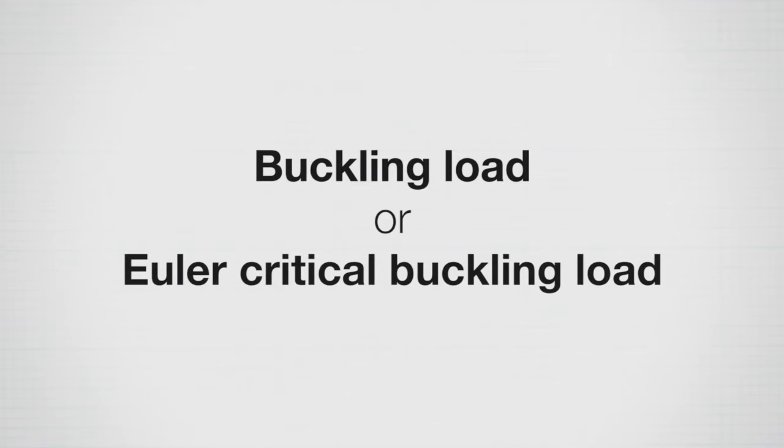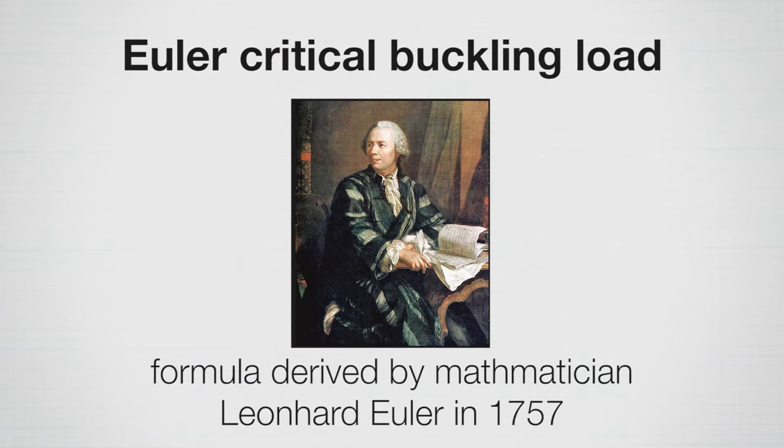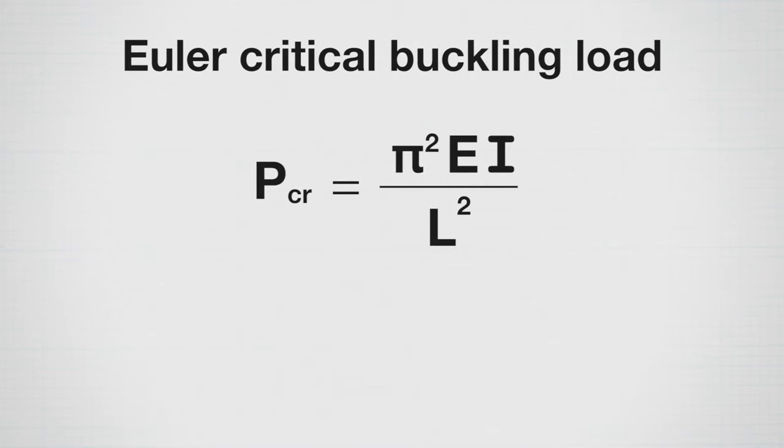The load at which a column will buckle is referred to as the buckling load. It's also referred to as the Euler critical buckling load. It's named after mathematician Leonard Euler, who discovered or derived the formula in 1757. And if we look at this equation, the equation has P critical equals pi squared EI over L squared.